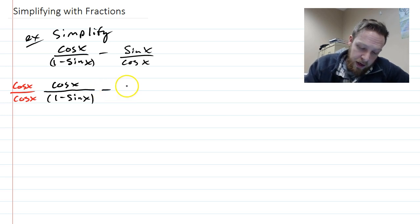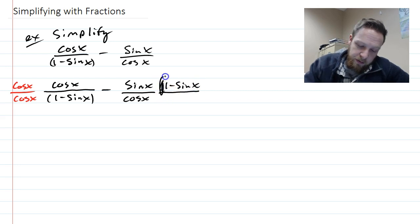On the other side, it's going to be the opposite. I already have a cosine x, so I need to multiply by one minus sine x all over. Oops, and I meant for that to be in red there.